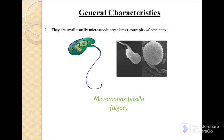Today's video is on the general characteristics of Protist, Protozoa, and Metazoa. The first characteristic is that they are small, usually microscopic organisms. They are very small and we cannot see them with our naked eyes — we need to use a microscope to observe them. An example is Micromonas; you can see the drawn colorful picture on the left and the original microscope image on the right. This is Micromonas, an algae.